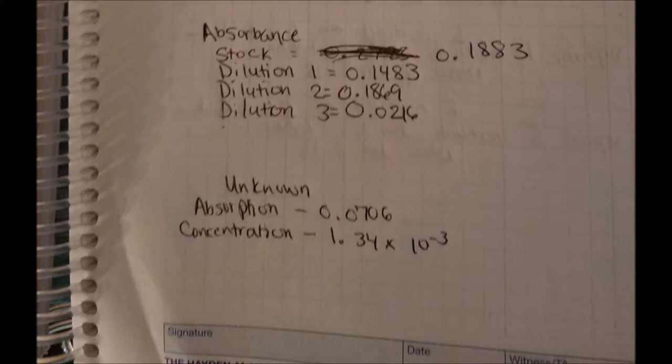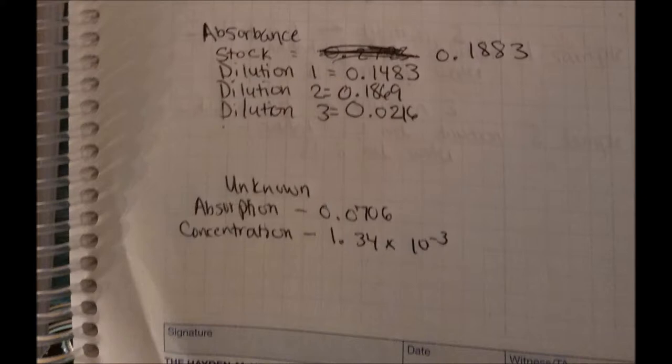The computer automatically saves your data. It reveals the linear relationship between absorption and concentration. Therefore, if you don't zero the machine with a blank in the beginning, the absorption values will be incorrect because the water is not negated in the dilution, and once you graph, the linear relationship will not be reflected.